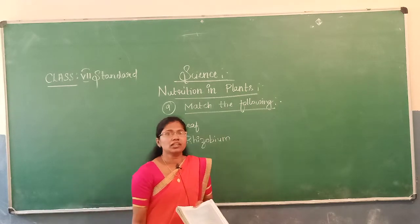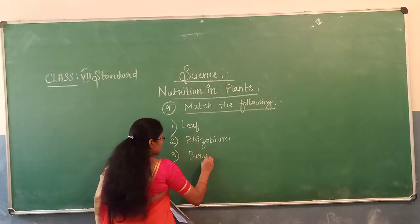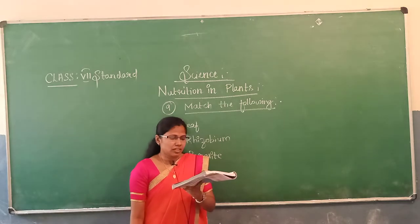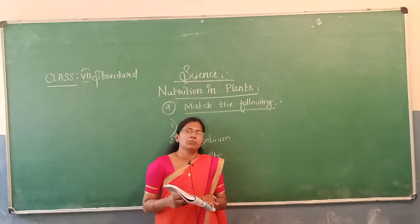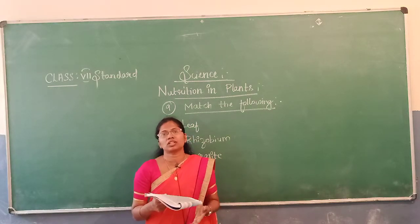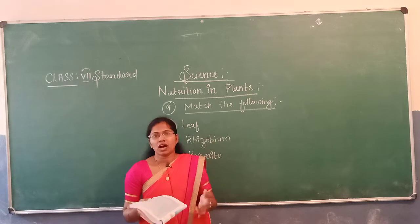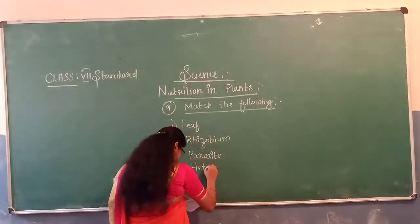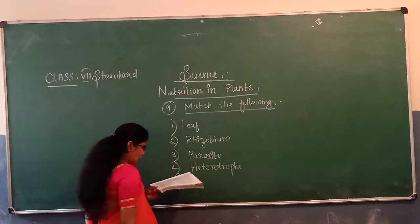The third item is Cuscuta. Cuscuta is a parasite which grows in yellow colour. The next item is animals. Animals belong to heterotrophs, because they cannot prepare their own food and they depend on other organisms for food. So animals match with heterotrophs.